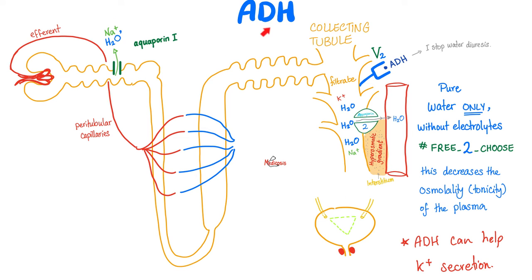Now let's talk about ADH — antidiuretic hormone. The name has the answer: it's antidiuretic, it does not want diuresis, it does not want you to lose water in the urine. So ADH will help reabsorb all that water from the kidney back to the blood.